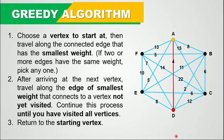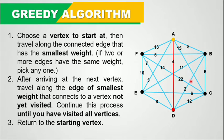Now we have arrived at vertex D. After arriving at the next vertex, which is step 2, we will travel along the edge of smallest weight that connects to a vertex not yet visited. The edges connected to vertex D are: D to C with weight 12, D to B, D to F, and D to A — which we have already traveled along. The edge with the smallest weight is D to B, so we will travel along this edge.